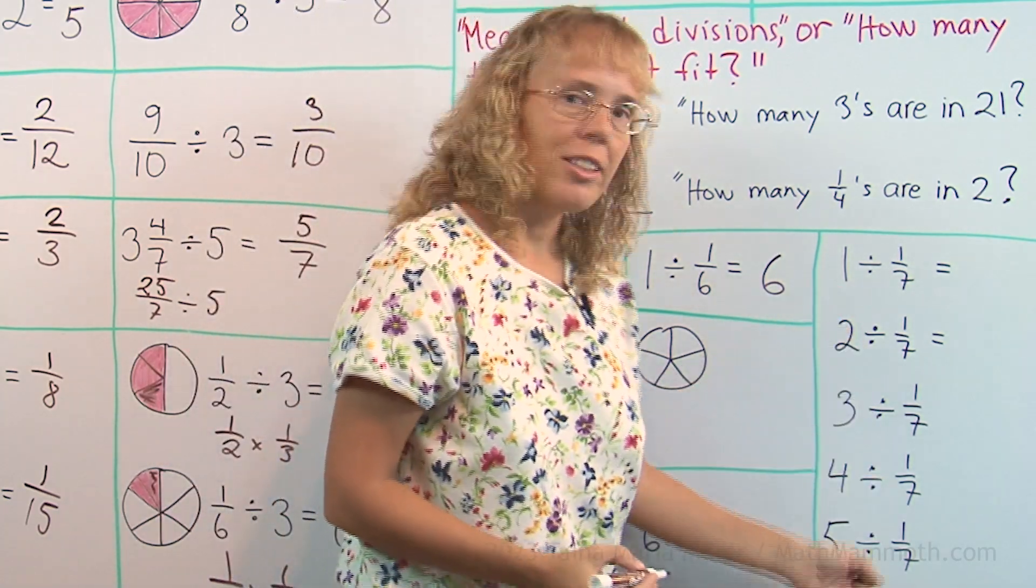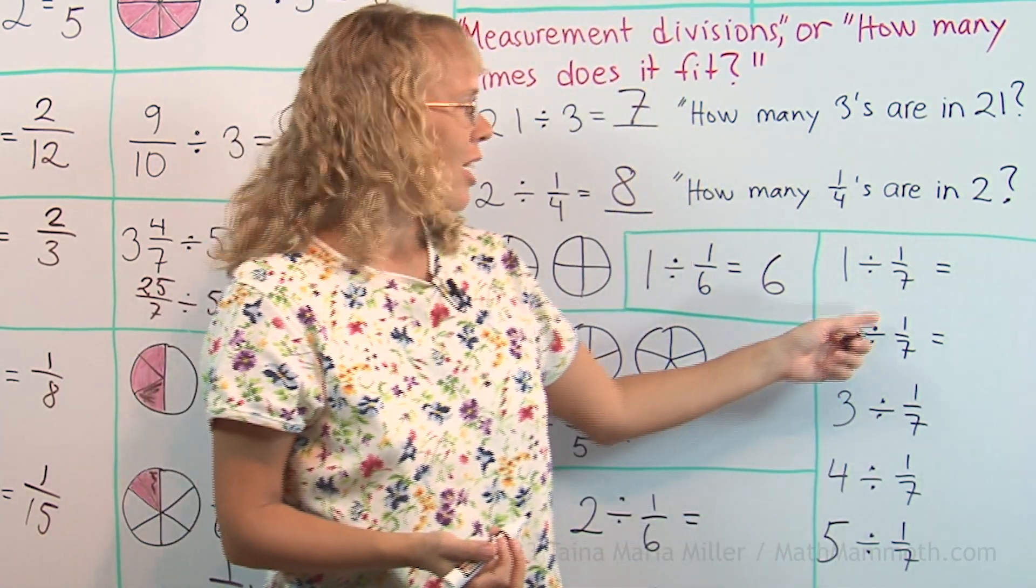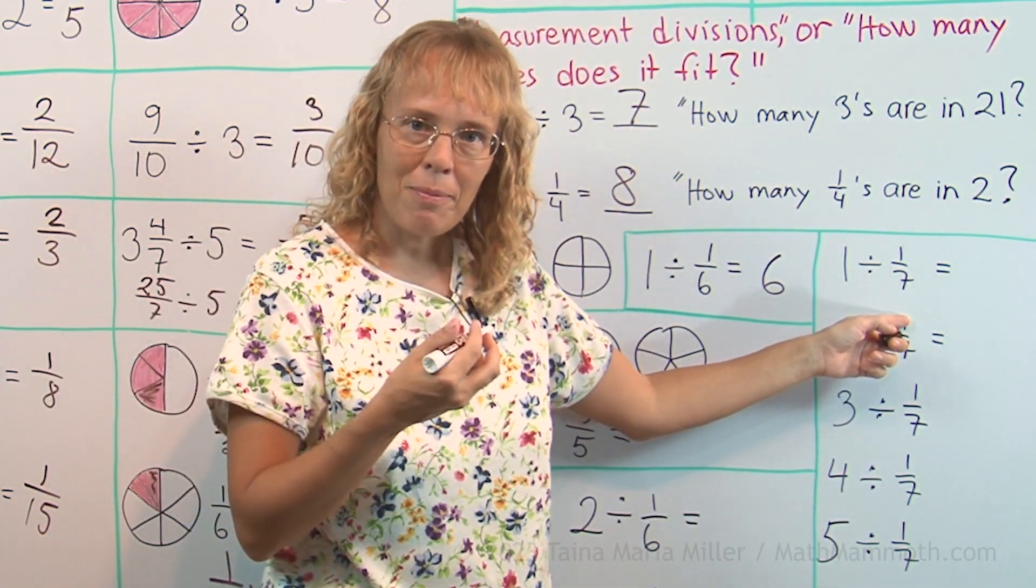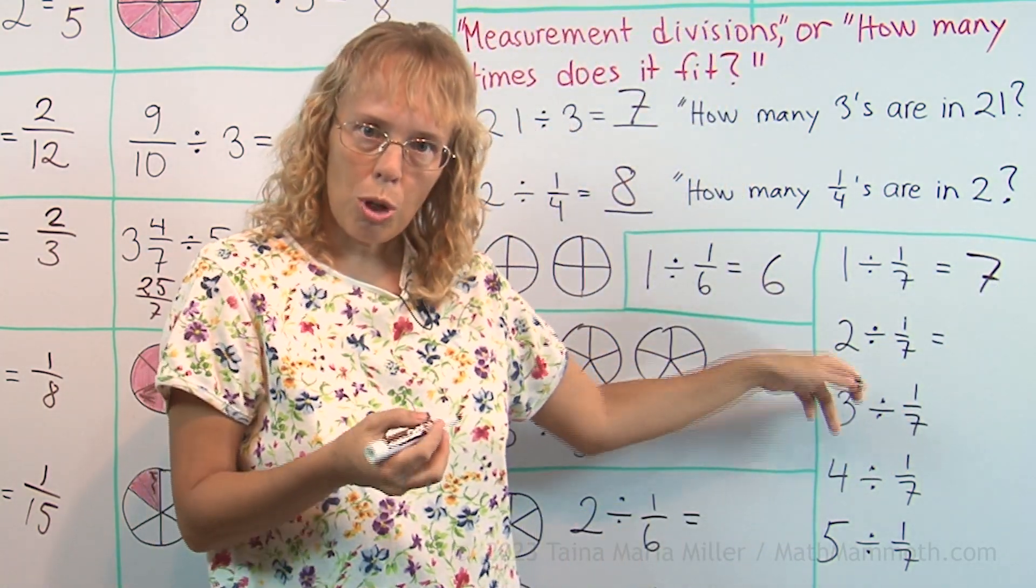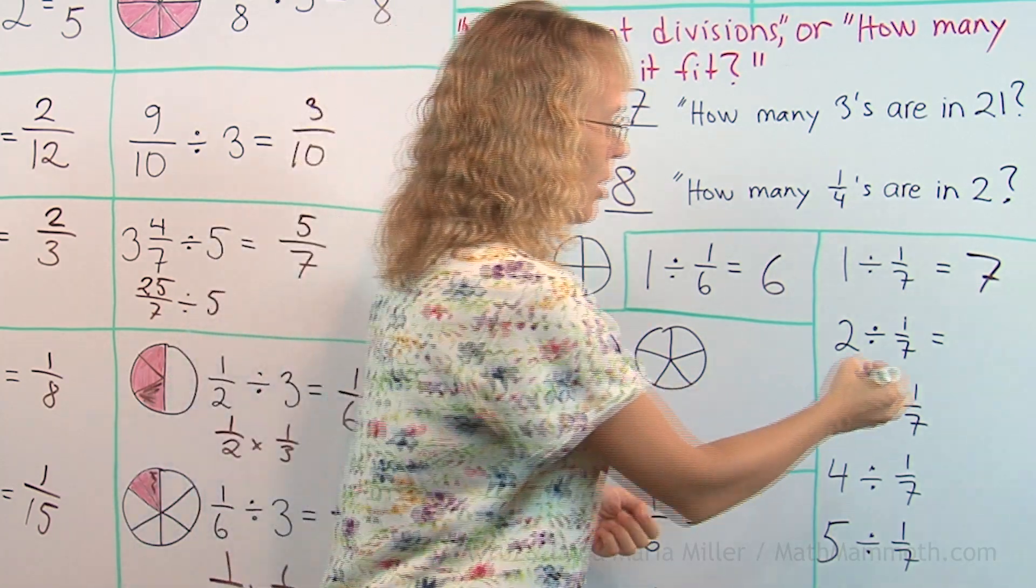And here I made a pattern using those divisions. How many sevenths fit into one whole? Seven. Well, how about how many sevenths would fit into two whole pies? It's, of course, double as much, right?